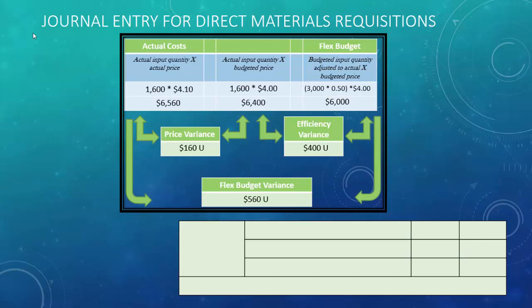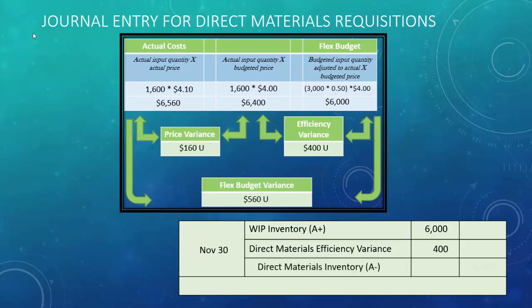For direct material requisitions — putting materials into production — on November 30th: debit WIP inventory for $6,000. Every debit to WIP always comes from the flex budget amount in standard costing. We debit direct materials efficiency variance $400 because it's unfavorable. Credit direct materials inventory $6,400 to move those materials from direct materials inventory into WIP.